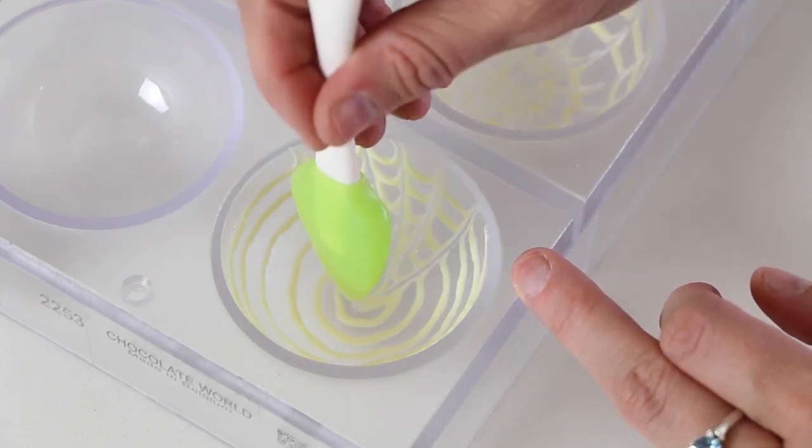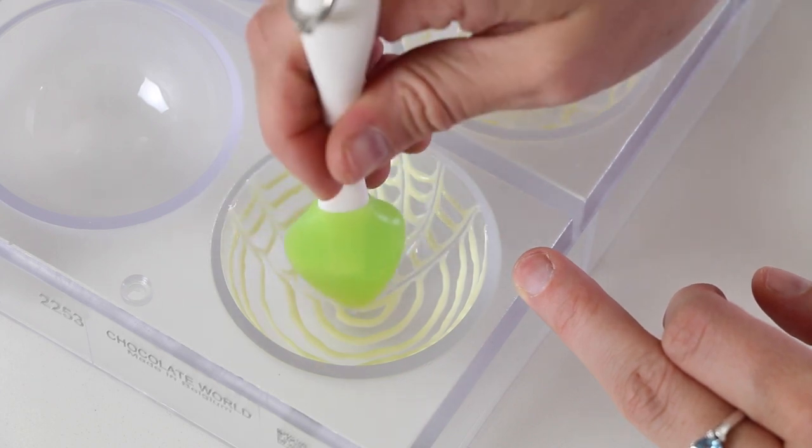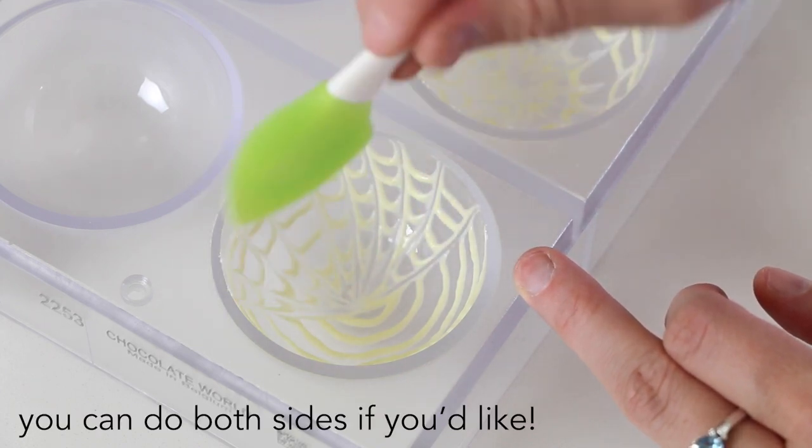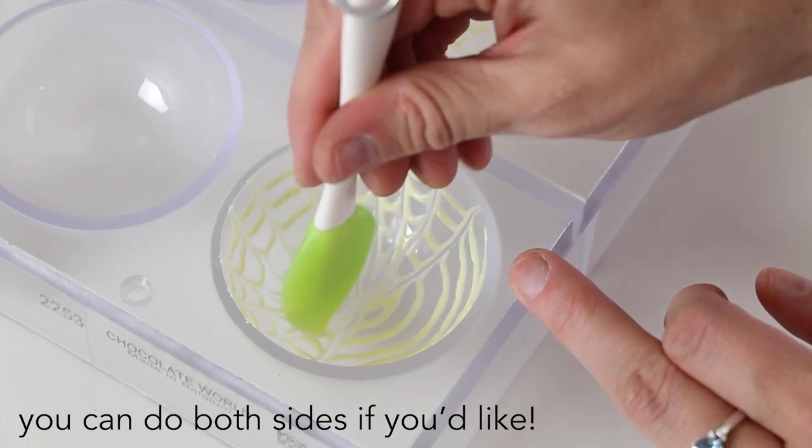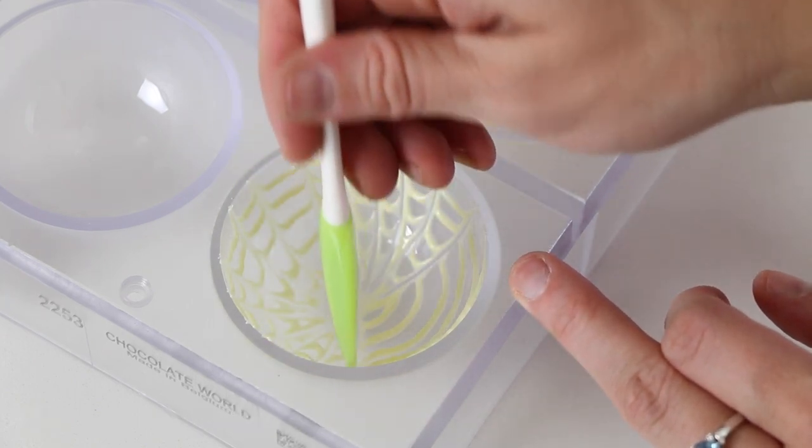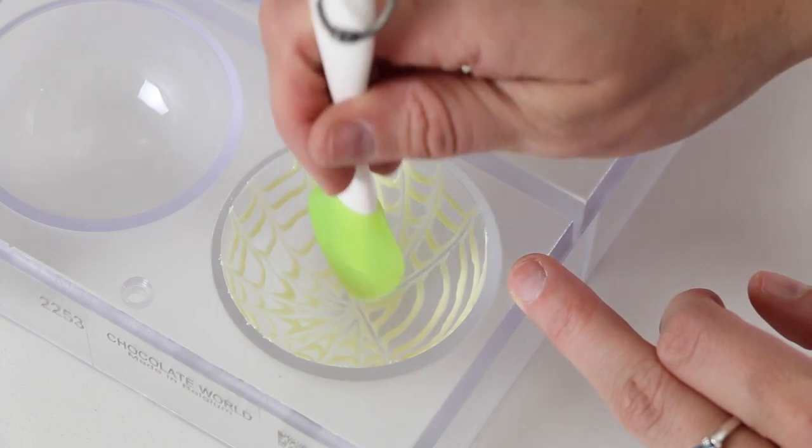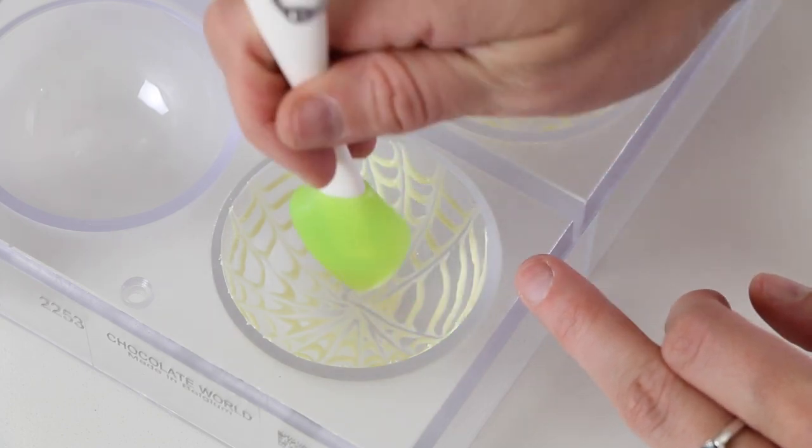I'm only going to do one side of the hot cocoa bomb, and it'll end up kind of looking like the spider web is just hanging over one half of the sphere.